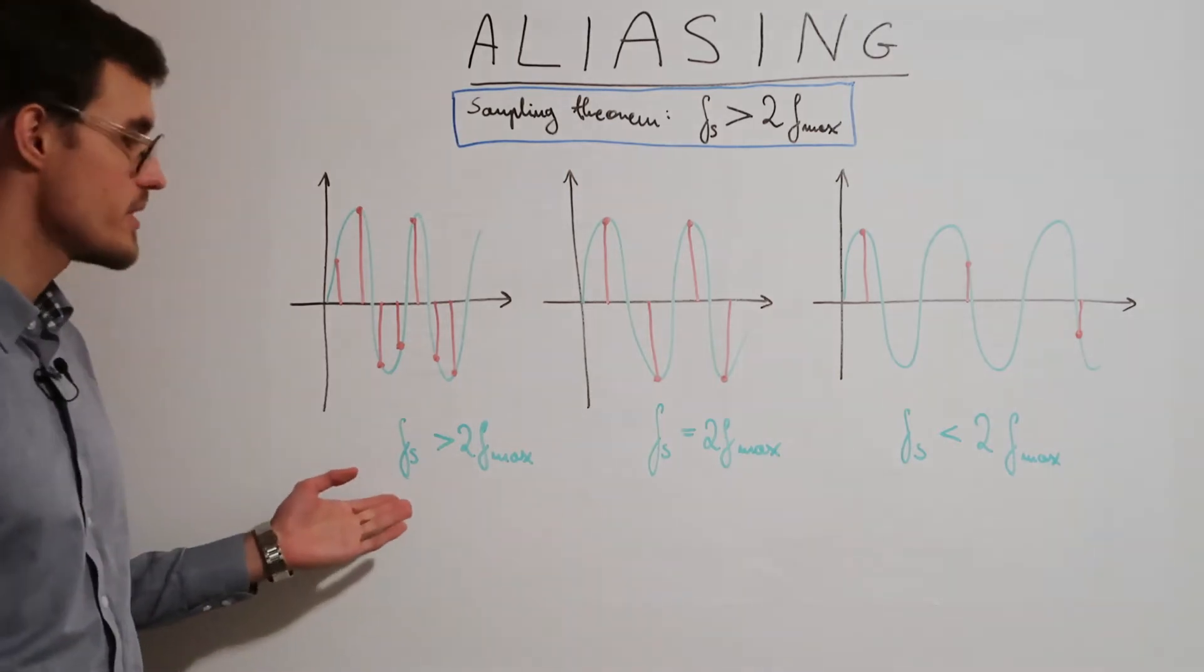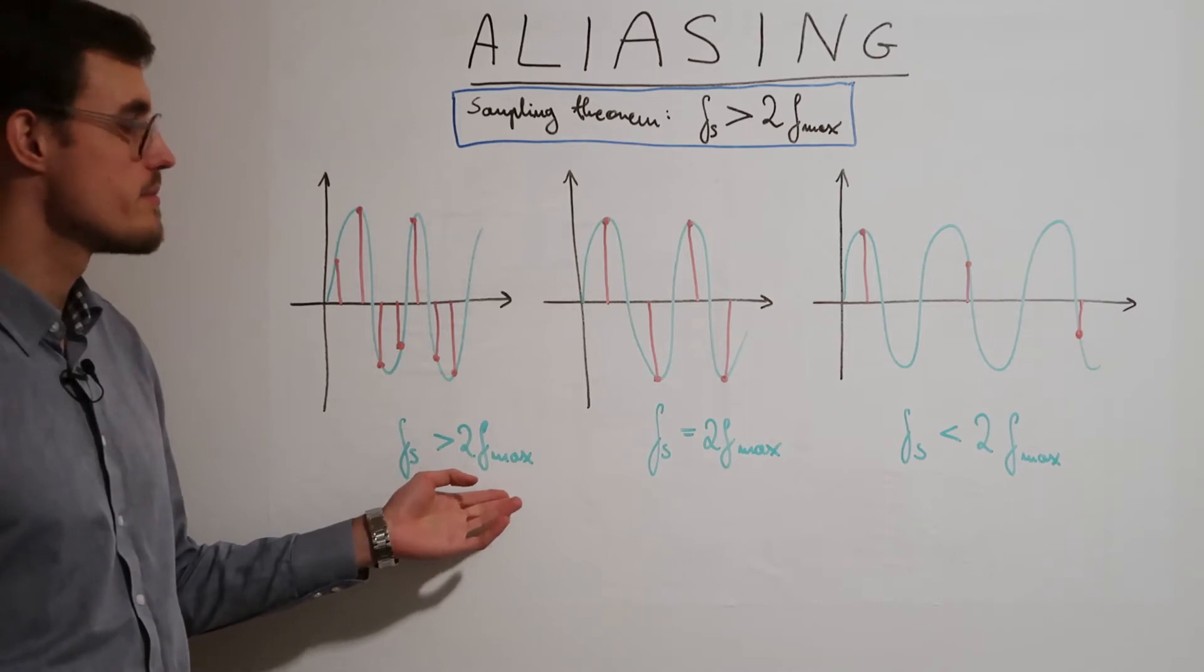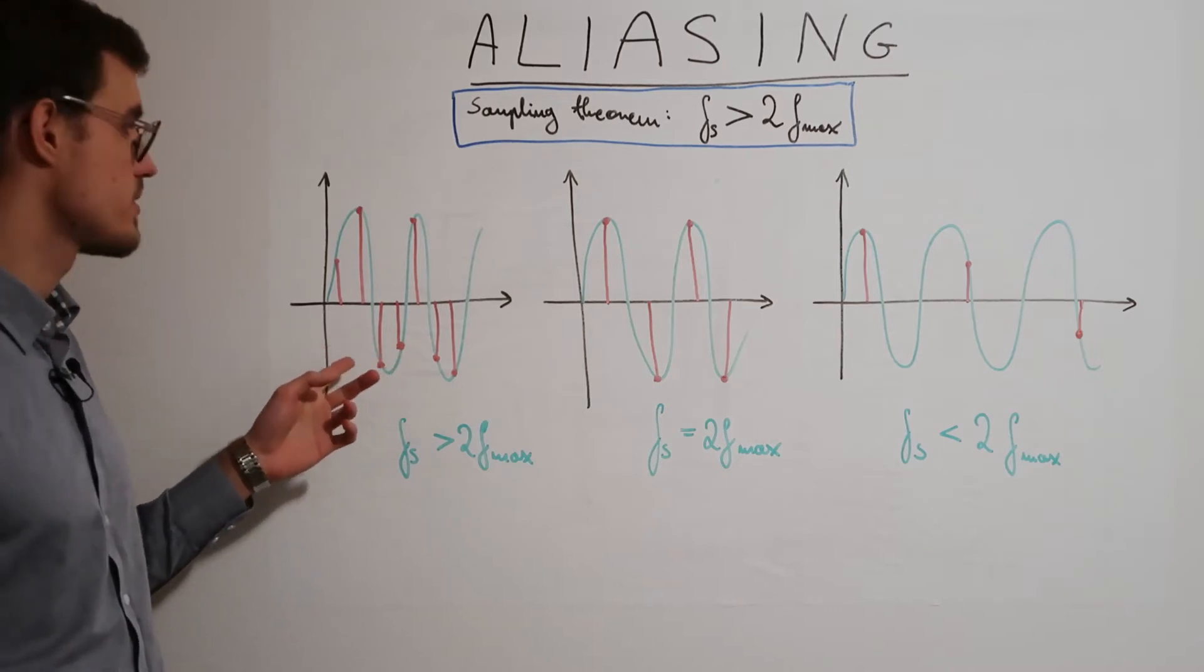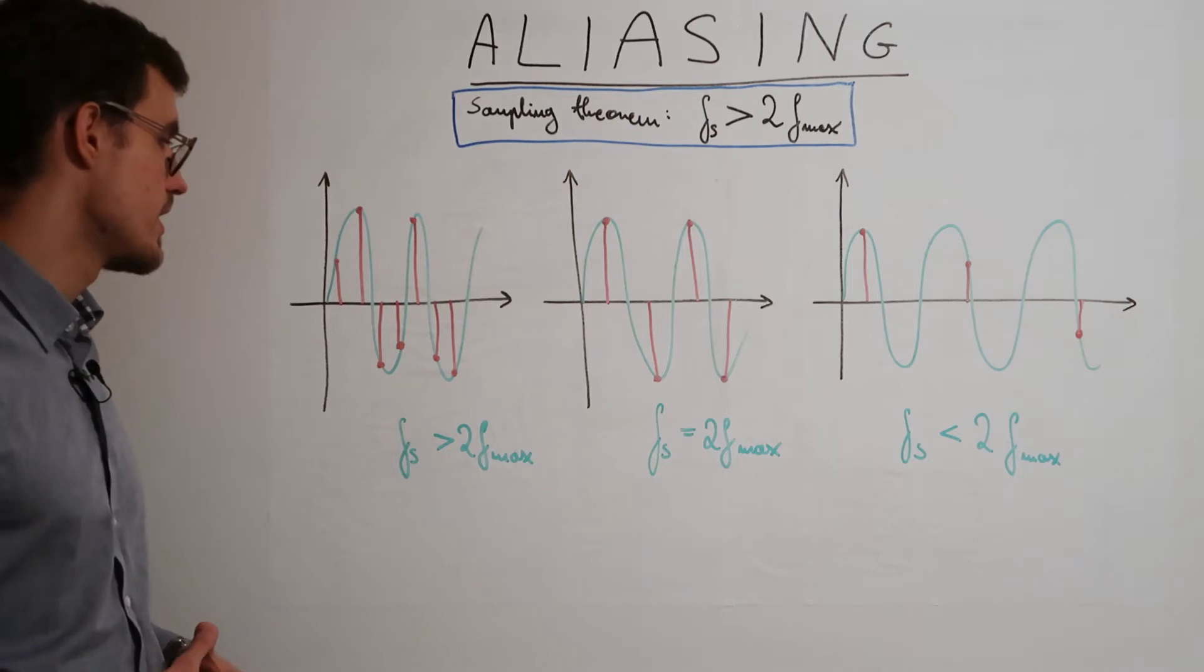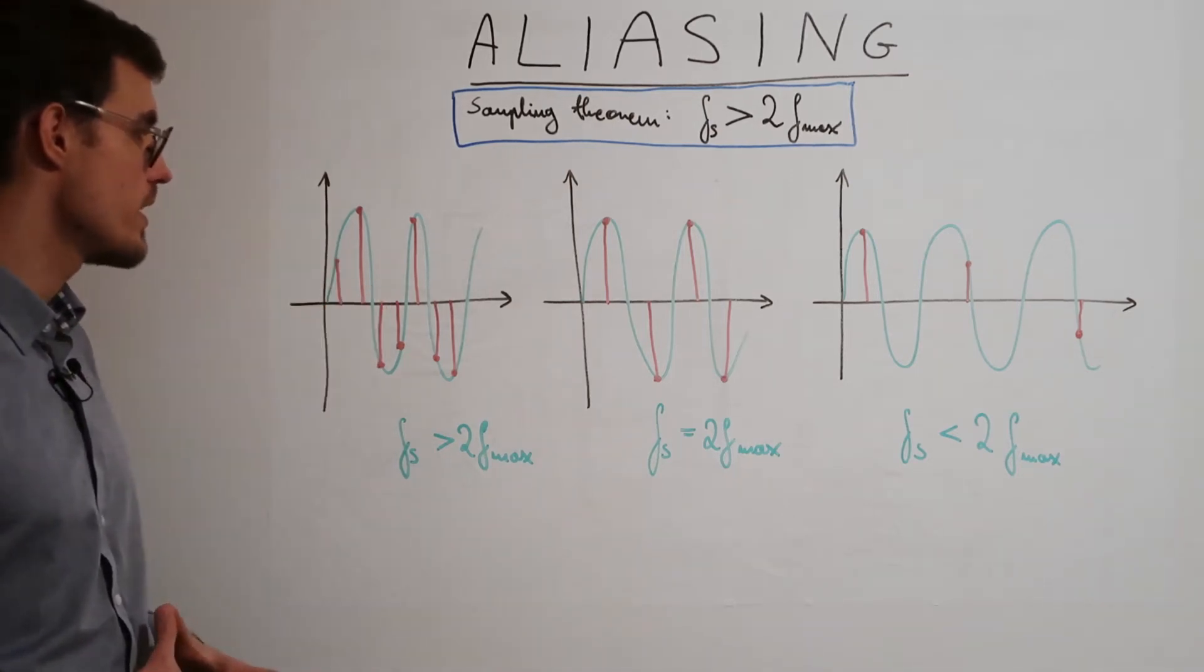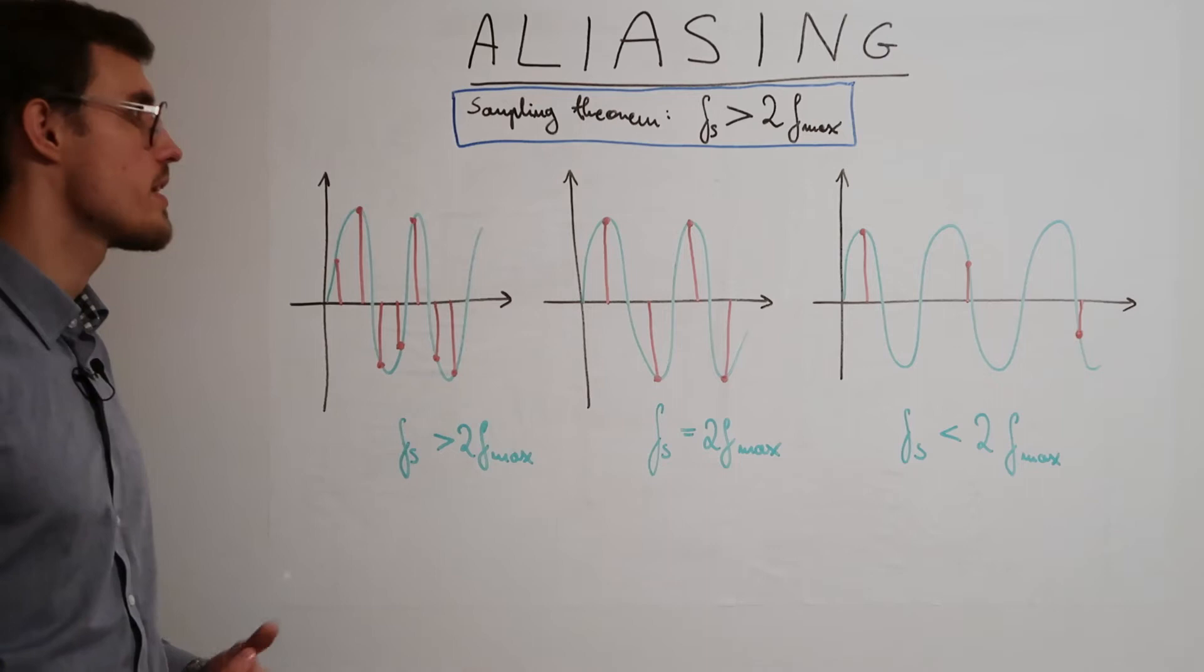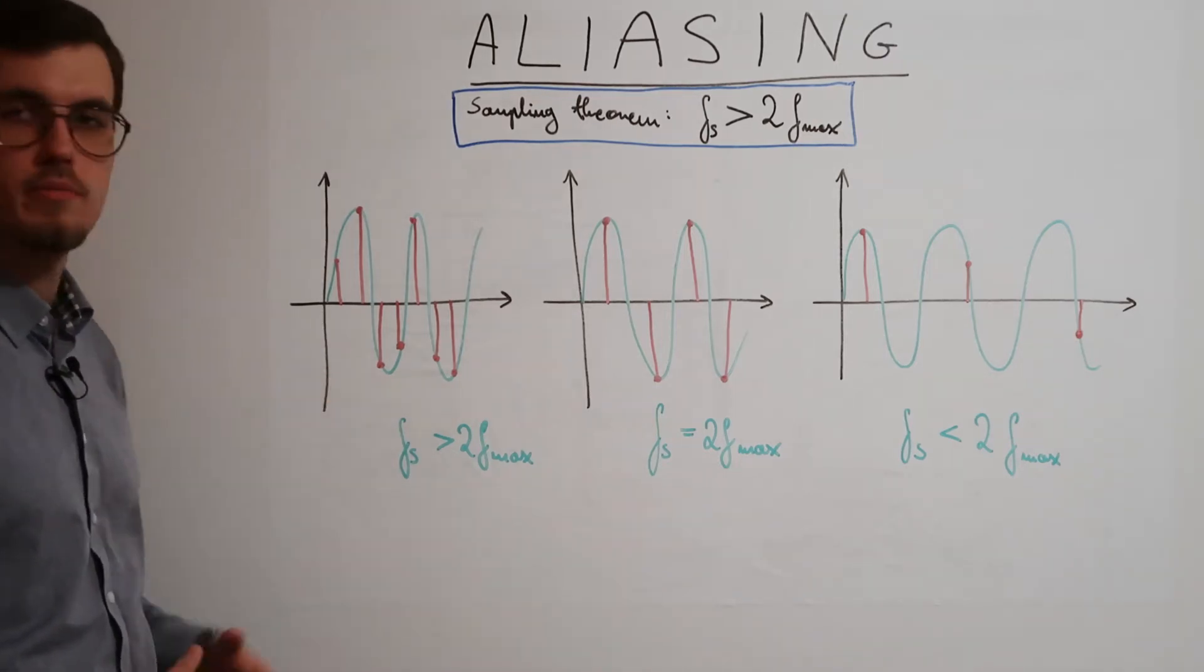In the first one we have sampling rate greater than two times the maximum frequency in the observed signal. So we take over two samples per each period of the observed signal. As we can see from these samples we can quite well see the overall shape of the signal we sample. And thanks to the sampling theorem we can reconstruct this shape perfectly.